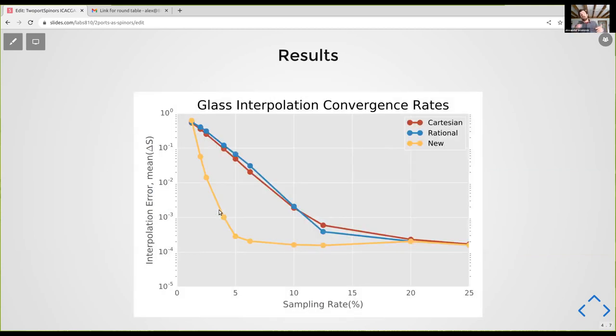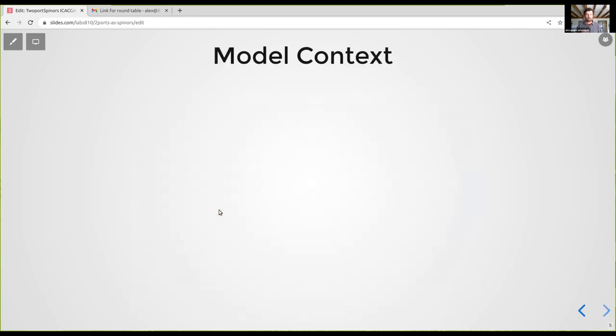So what you want to know is how is this going to do on average and how fast is it going to converge compared to existing results? So here's a plot of the interpolation error on the y-axis and log scale versus sampling rate on the x-axis from 0 to 25%. And this just illustrates that the new method converges rapidly compared to both a couple of the old ones. The Cartesian is the one I explained, the rational I didn't explain, but anyway, it's much better. The results are much better.